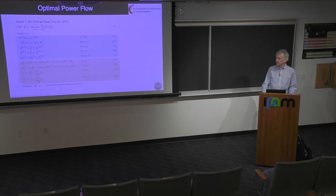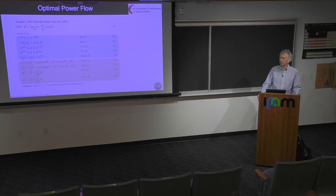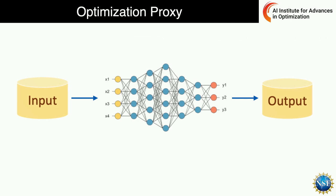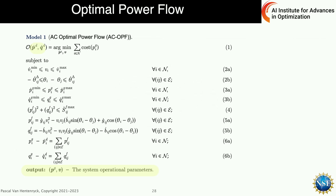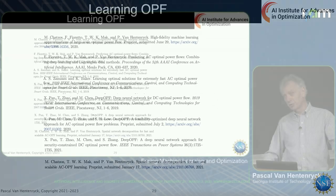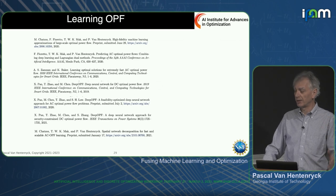Let me talk about optimization proxies. The core problem is called the AC Optimal Power Flow (ACOPF). You see the engineering constraints at the top and physical constraints at the bottom — they are non-convex equality constraints that are quadratic, with trigonometric functions in hybrid form. The goal is to build an optimization proxy for this ACOPF. The input is the real and reactive load; the output is the set points of the generators. That's what the proxy has to learn.